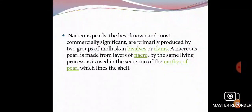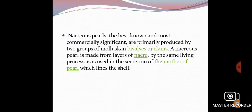Real pearls are primarily produced by two groups of molluscs: bivalves and clams. A nacreous pearl is made from layers of nacre, by the same layering process as is used in the secretion of the mother of pearl which lines the shell. The nacreous layer is every time responsible for the formation of pearl or gemstone. If nacreous secretion is not possible, then pearl or gemstone formation is not possible.